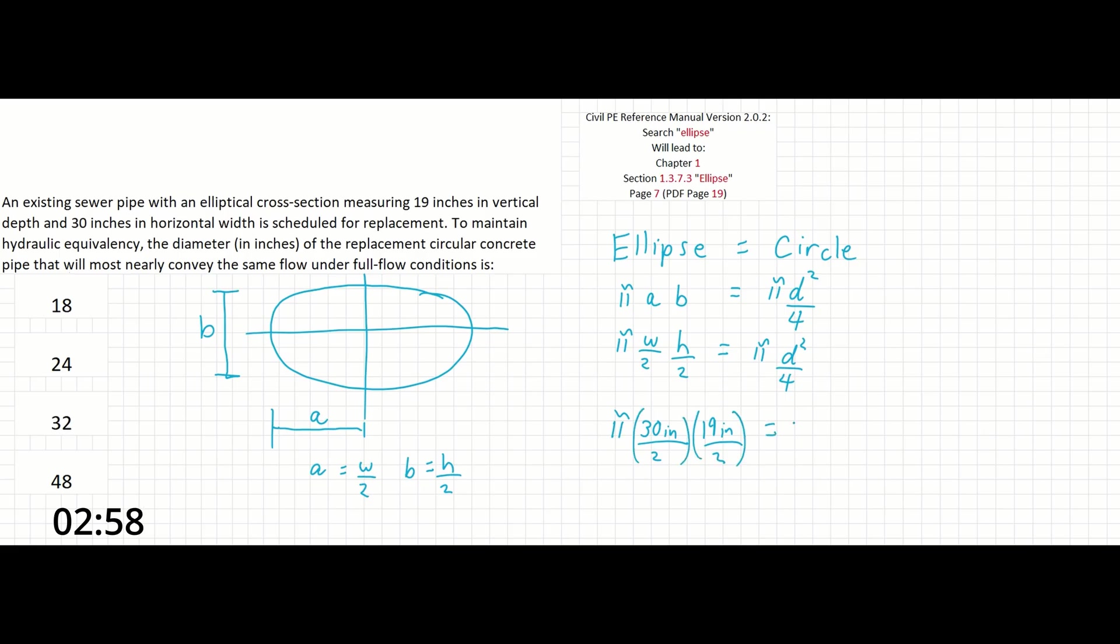If we want to simplify this even more, we could cross out 4, 2, 2, π and π, leaving us with just 30 inches times 19 inches equals d².